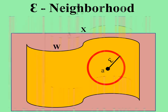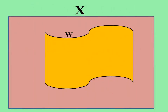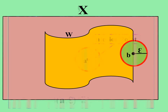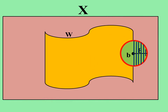Let's see about an interior point. Let us consider a point e in the subset W. The neighborhood exists around point e — that is, the ball B(a, epsilon) is contained in W. So the point a is said to be an interior point. In this diagram, the open ball around center point b with radius epsilon is not contained in the subset W. So W is not a neighborhood of the point b. Since a neighborhood does not exist around b, b is not an interior point. Thank you.